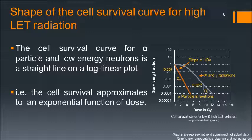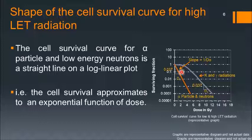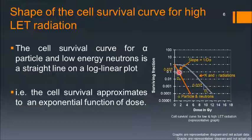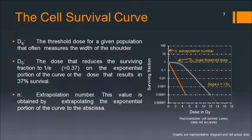The cell survival curve for high LET radiation is different from that of low LET radiation. For low LET radiation we had an initial slope, a shoulder, and a final slope. However, for high LET radiation such as alpha particles and neutrons, the cell survival curve is a straight line on a log-linear plot — it approximates to an exponential function of dose. There is no initial slope, final slope, or shoulder. D0 is the dose that reduces the surviving fraction to 37% of its previous value.